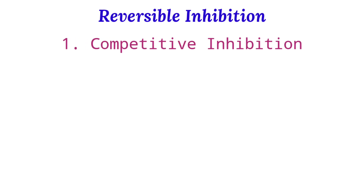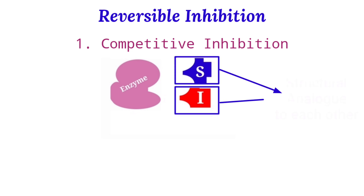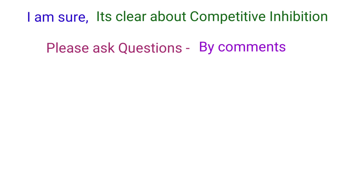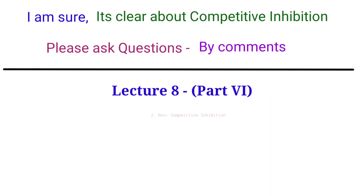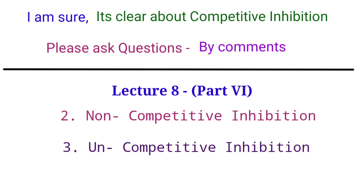In competitive inhibition, inhibitors and substrate compete to bind with the enzyme because the inhibitor and substrate are analogs of each other. In the next lecture we will discuss the remaining two types — non-competitive and uncompetitive inhibition — their differences and individual features in detail, as well as feedback inhibition. Please ask questions in the comment section. Thank you, see you in the next part.